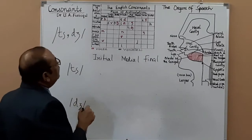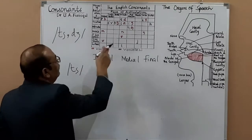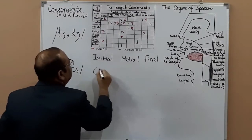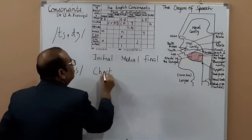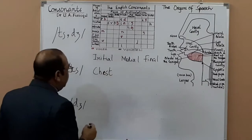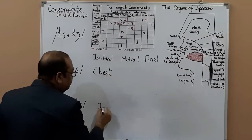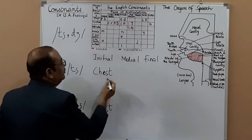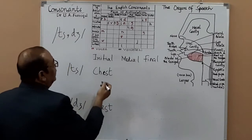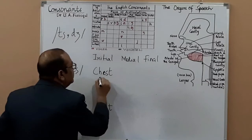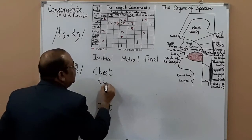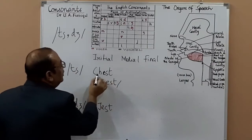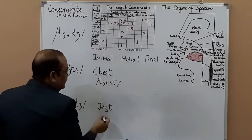We begin with the CH sound first. Taking the word 'chest' — you write it like this: CH, then 'chest'. Only the difference is there: this is 'chest', you write it like this. And a rhyming word could be 'jest'.